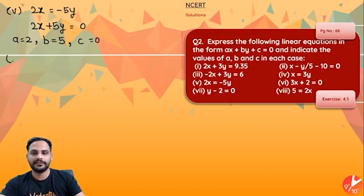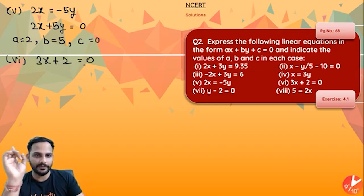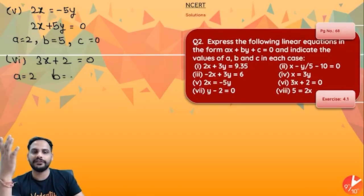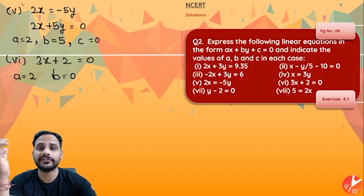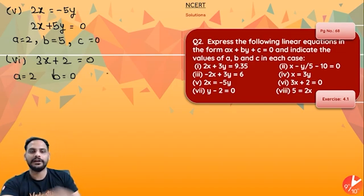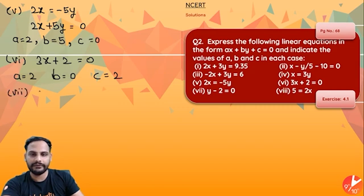The sixth equation is 3x + 2 = 0. Since the y term is not present, it is already in the general form. The coefficient of x is 3, and since the y term is absent, its coefficient is 0. You can understand this as 3x + 0·y + 2 = 0. So a = 3, b = 0, c = 2.